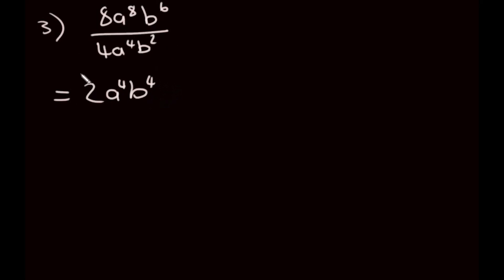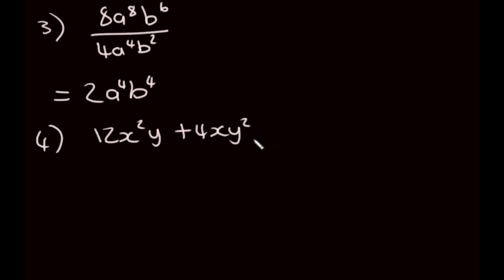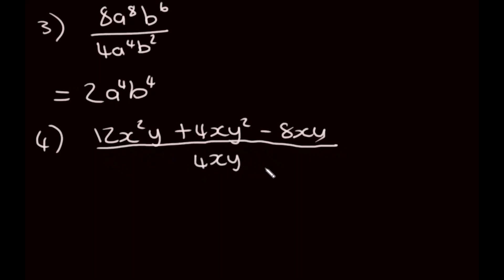That was division with just one term on top. Now a more complicated example: we have 12x squared y plus 4xy squared minus 8xy, all over 4xy. We're going to divide each term on the top by the term at the bottom. So first 12x squared y divided by 4xy, then 4xy squared divided by 4xy, and then negative 8xy divided by 4xy.